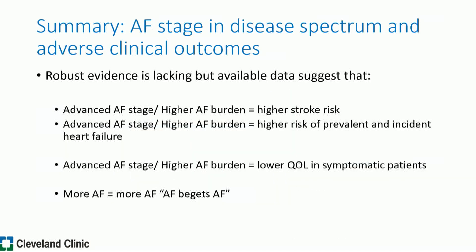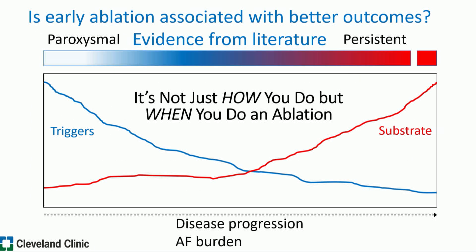In summary, when it comes to AFib stage and adverse clinical outcomes, more advanced AFib is associated with higher stroke risk, higher risk of prevalent and incident heart failure, and lower quality of life in symptomatic patients. AFib begets AFib, so more advanced AFib equals even more advanced AFib. It's important when you intervene — when you try to slow or stop that progression from happening over time.